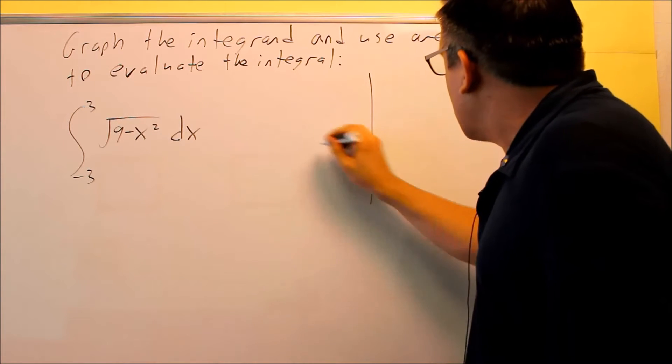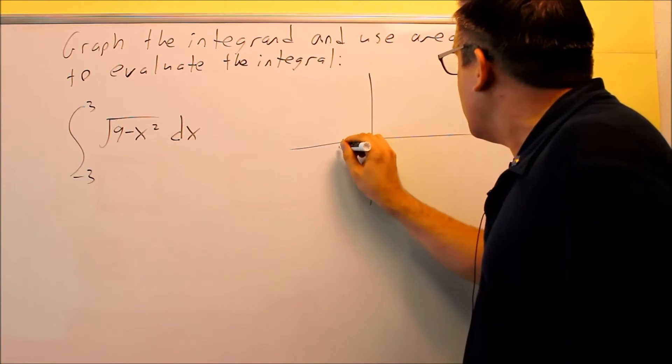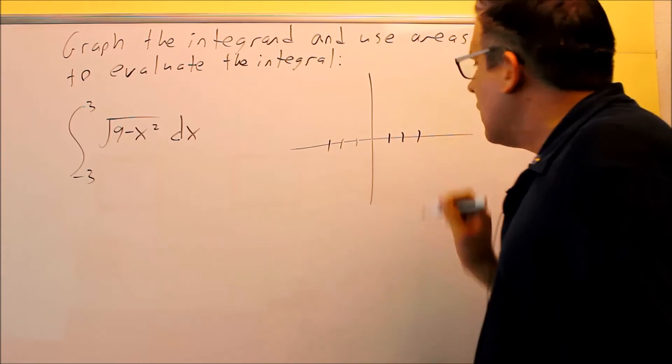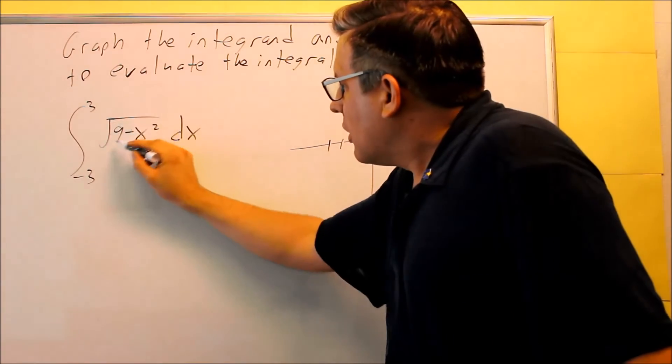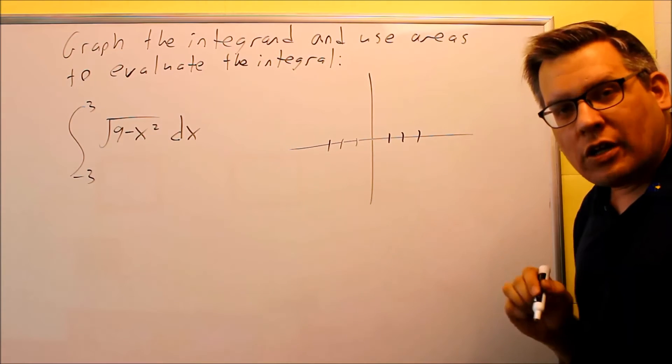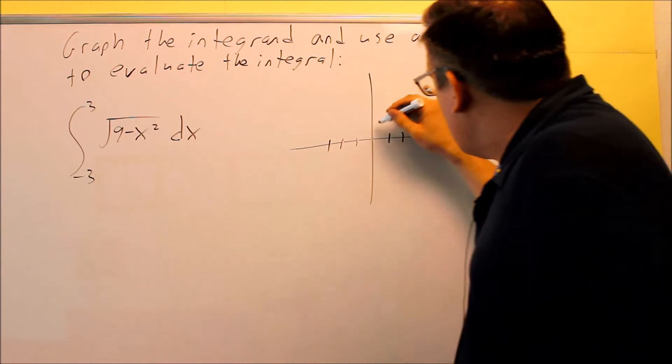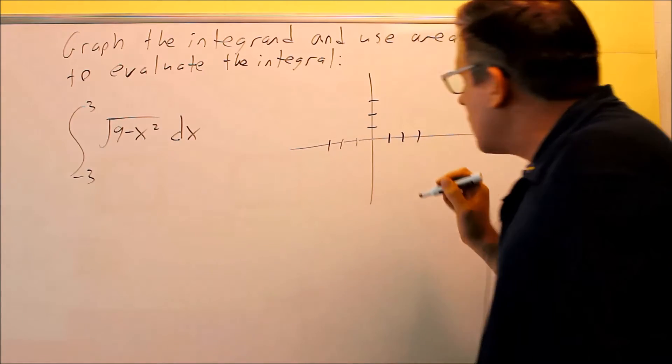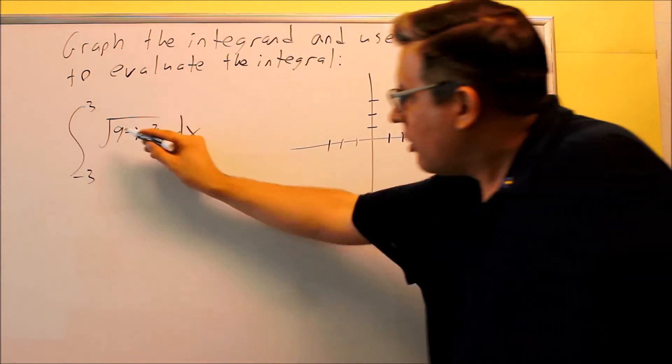So specifically what it looks like is we're going to be graphing it between negative 3 and 3. This here, if you take the square root of 9, that's 3. That's going to become the radius of your circle. So this way it works, all of them of this type are going to graph that way.